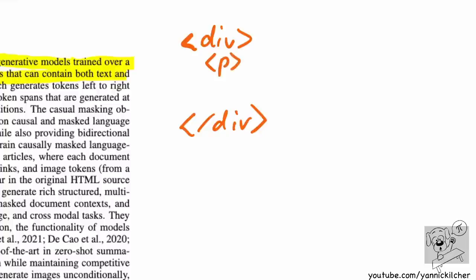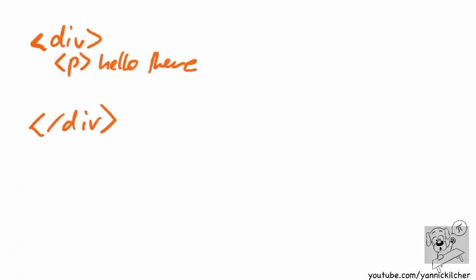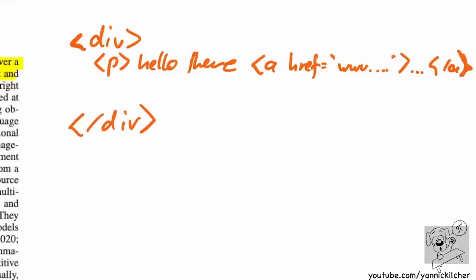Other popular elements are, for example, a paragraph - inside a paragraph you can have some text like 'Hello there.' And then you can also have hyperlinks, which start with an 'a' tag. These tags can be nested and can have attributes. The 'a' tag can have an attribute like an href, which is a URL - so www dot something and so on. It can have URLs within the document, then there is the text of the link, then we close the 'a' tag.